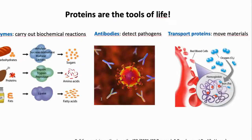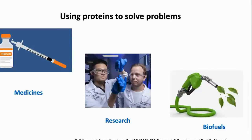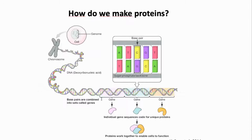Synthetic biology allows us to produce proteins. Proteins are the tools of life, and they are important for many purposes — for example, biochemical reactions: we can use enzymes to produce sugars, amino acids, antibodies to detect pathogens, or proteins that allow us to move some materials. Proteins allow us to solve problems in the real world: medicines, research, biofuels. But how can we produce proteins?